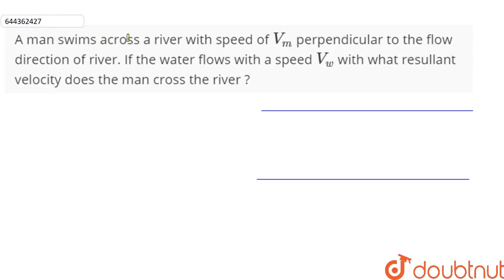A man swims across a river with a speed of vm perpendicular to the flow direction of the river. If the water flows with a speed vw, with what resultant velocity does the man cross the river?